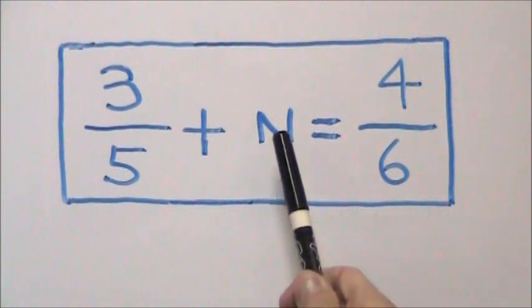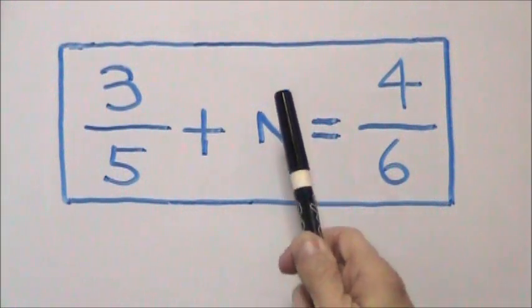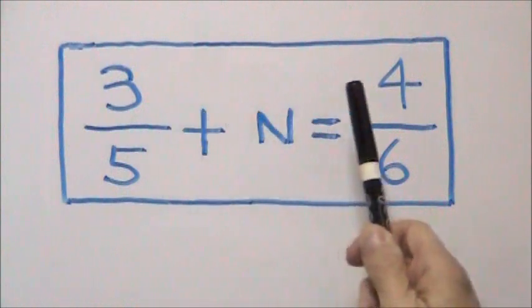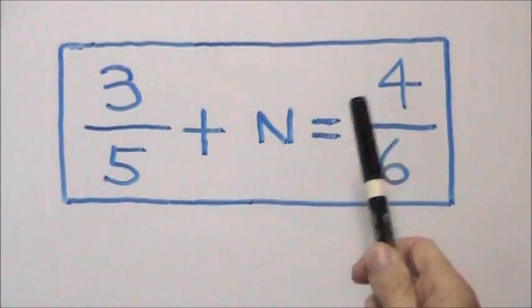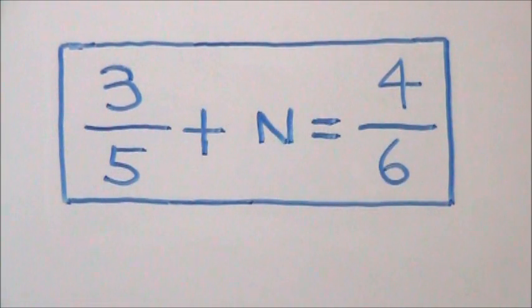We find the missing fraction by subtracting the smaller fraction from the bigger fraction. So we write out our equation: 4 sixths minus 3 fifths.